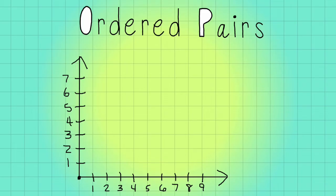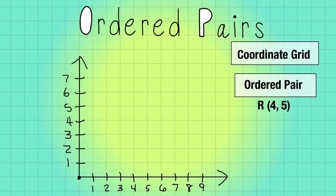Welcome to the coordinate grid. Here it's important for us to understand what a coordinate grid is. As we can look over here, you see this area, this would be our coordinate grid. It's used to plot coordinates of an ordered pair.